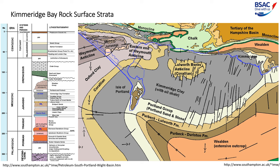Portland stone has been used to build many famous buildings like St Paul's Cathedral, Buckingham Palace and the United Nations headquarters in New York. Note that in this slide we've talked about some seabed types already: gravel, sand, silt, clay and mud — we'll discover the difference in a few more slides.